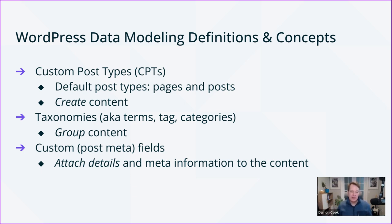Taxonomies — often called terms, tags, or categories — allow you to group your content. If you're familiar with WordPress, the default post types include pages and posts, and posts have categories and tags by default. These taxonomies offer a way to classify and group related content across different post types, which enhances the content management experience that WordPress excels at.